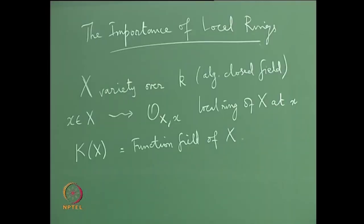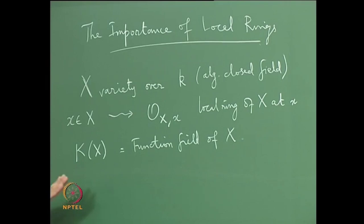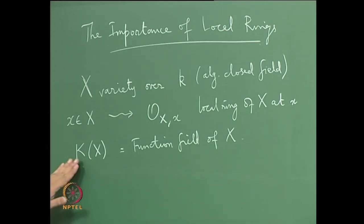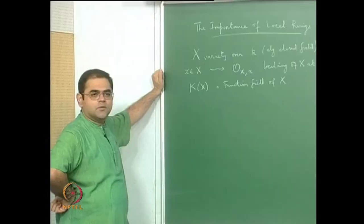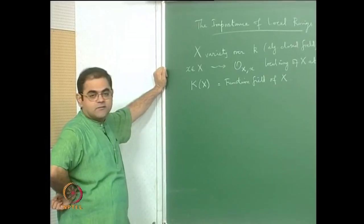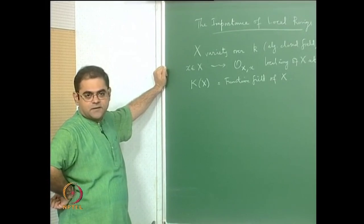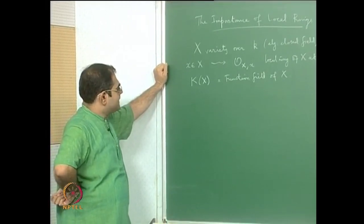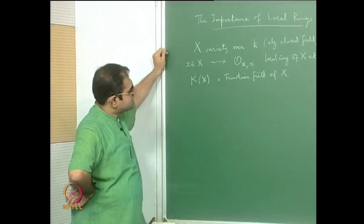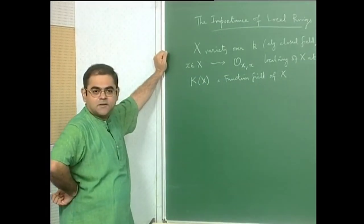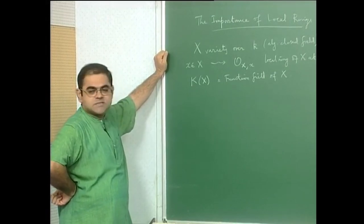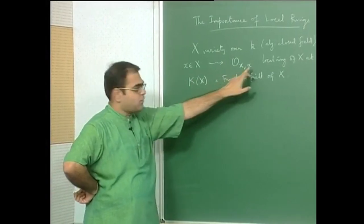We have seen that k(X) consists of equivalence classes of rational functions — namely regular functions which are defined not on all of X but on an open subset of X. Two functions are equivalent if they coincide on the intersection of their domains of definition. The local ring is obtained by concentrating attention on regular functions in a neighbourhood of the given point small x.